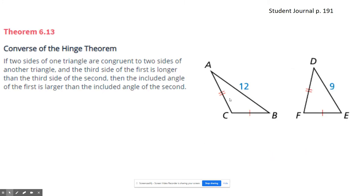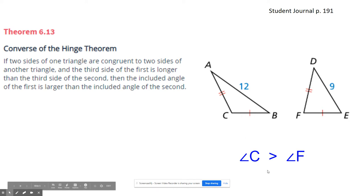You can think about it the opposite way. If you know the side lengths and you have two pairs of congruent sides, side AB is longer than side DE, so the angle that's in between the two congruent sides — angle C — must be bigger or greater than angle F.